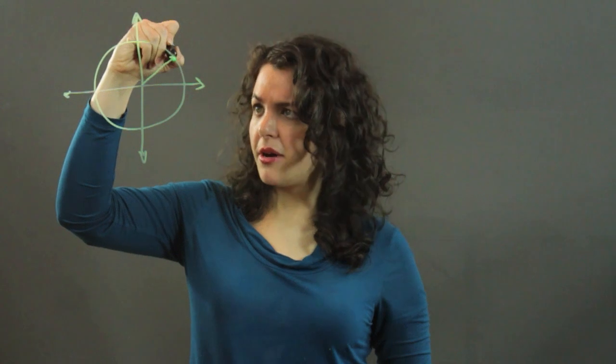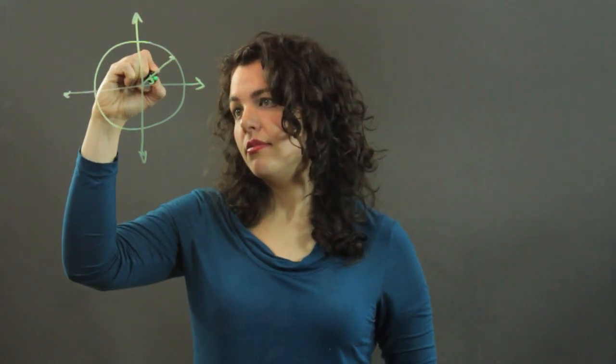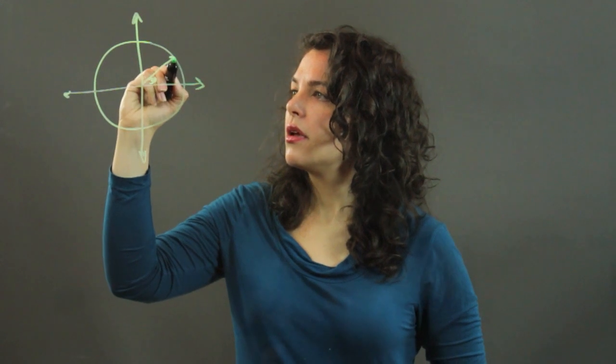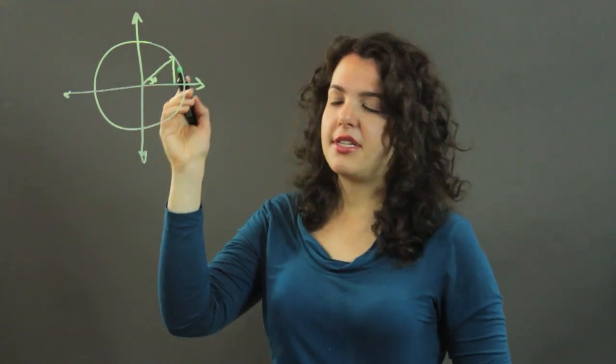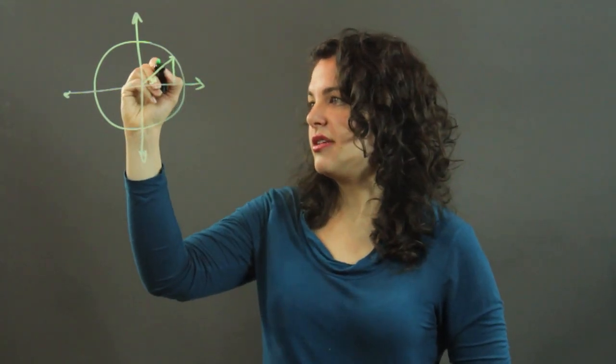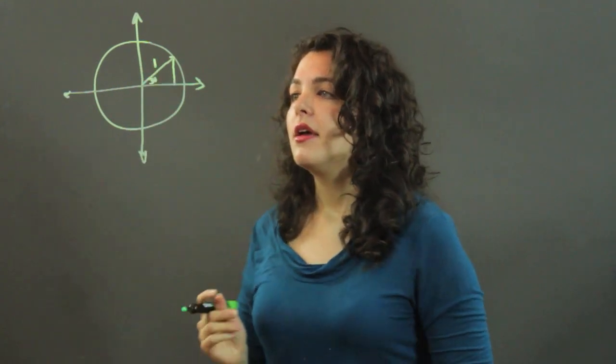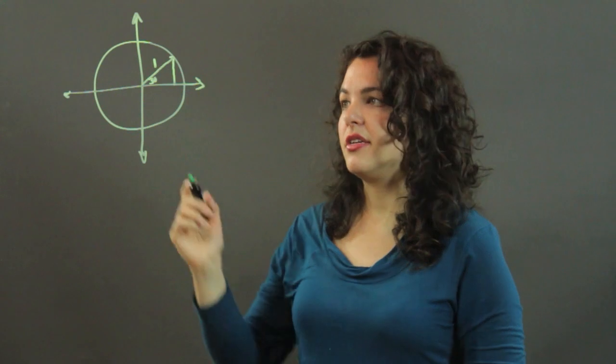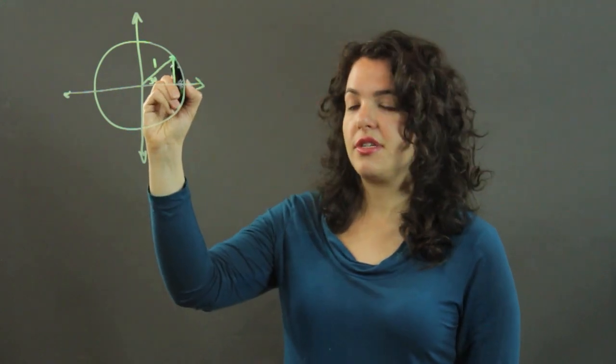And I'm going to draw 30 degrees. Now, because this is a unit circle, it has a radius of 1, and to find the sine and cosine, we just have to look at the x and y coordinates of this point.